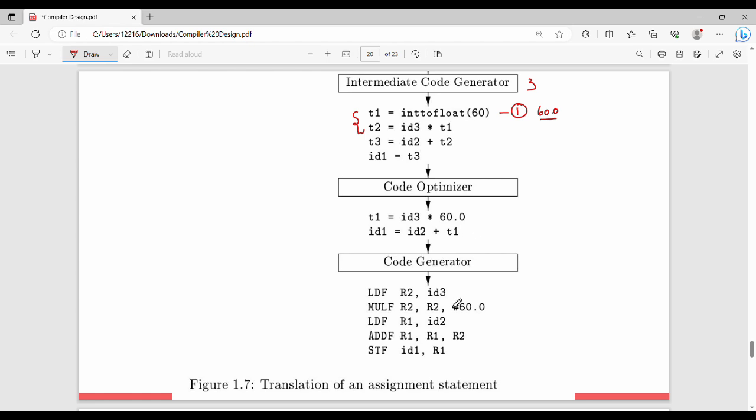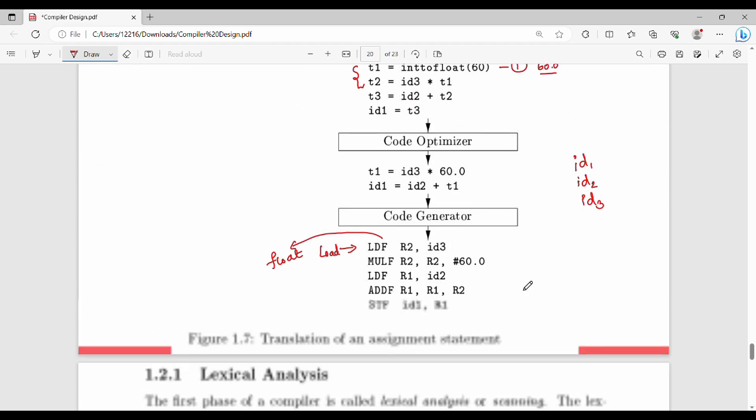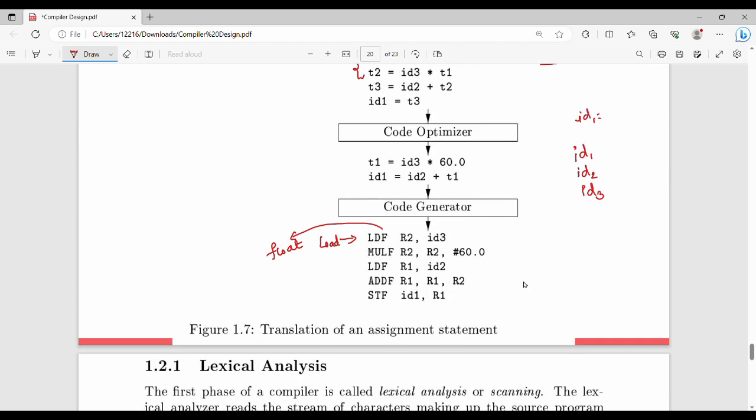Next, we will generate target machine level code. Machine level code is like this. Load, LD means load. F is called float. What does it mean? We store id3 value in R2. id1, id2, id3. What does it mean? The question is id1 is equal to id2 plus id3 into 60. That's the question.